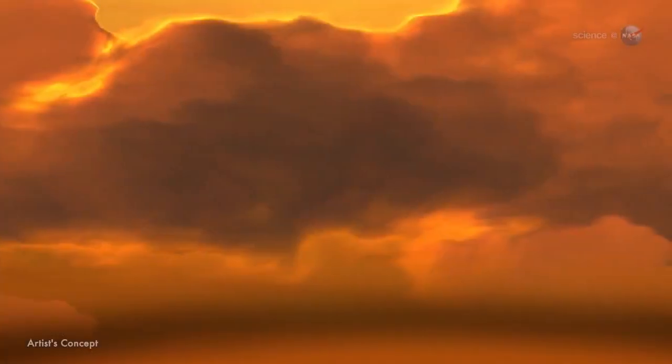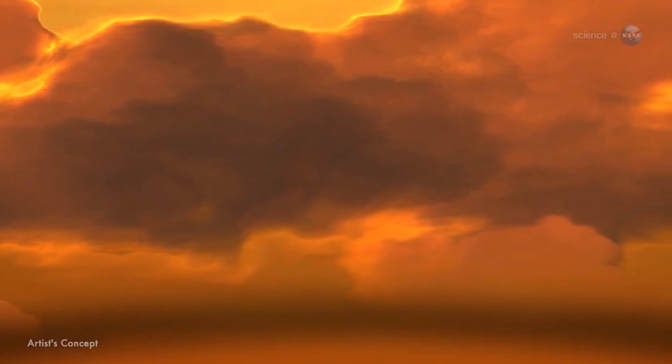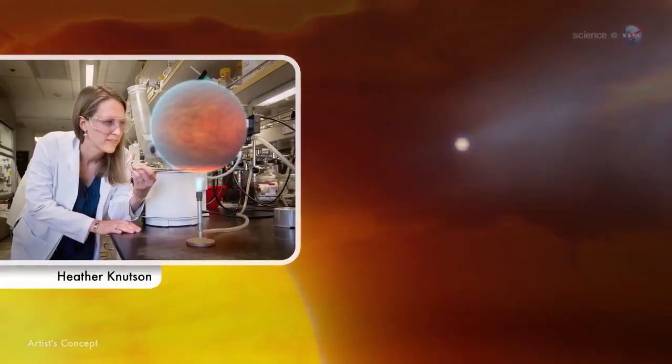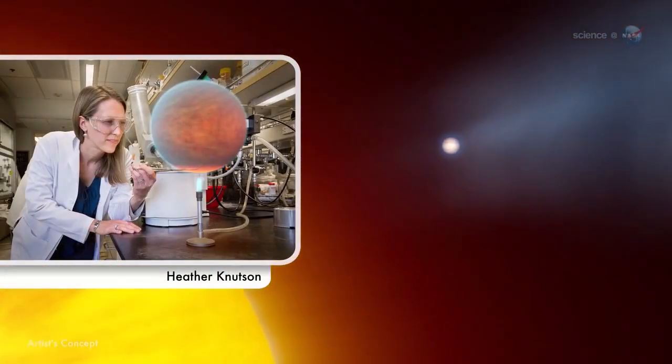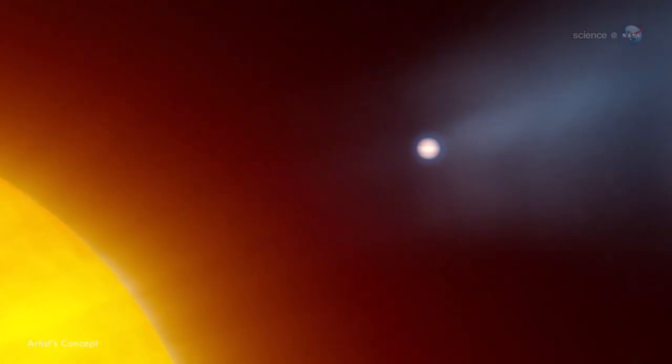Meteorologists watching this video are probably wondering what kind of weather a world like that might have. The short answer is big. Heather Knudsen of Caltech made the first weather map of a hot Jupiter in 2007. It's not as simple as taking a picture and, voila, we see the weather, says Knudsen.